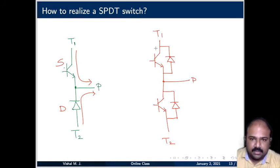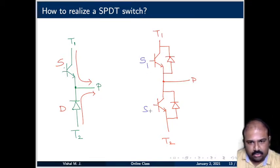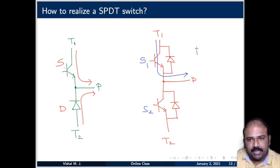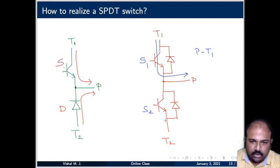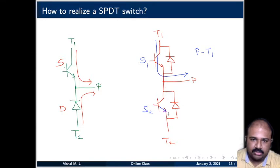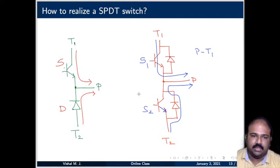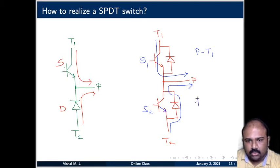When switch S1 is on, current can flow through the switch to P — P and T1 are connected through the switch. When current flows in the other direction, current cannot flow through the switch because of the emitter direction. So current has to take the path through the diode to flow through P. When current flows through the diode, it gets connected to terminal T2. This is the same scenario as before — through the diode it gets connected to T2.